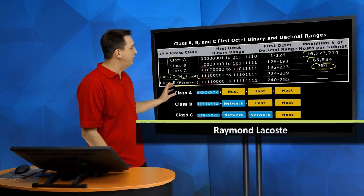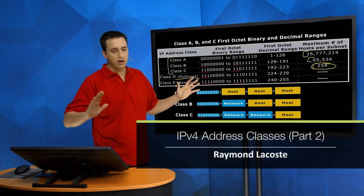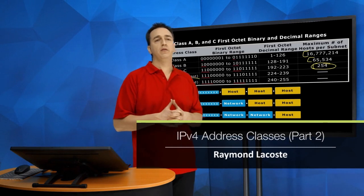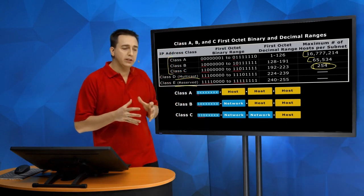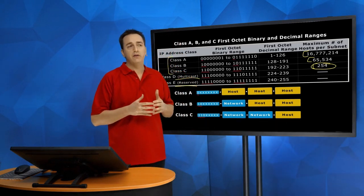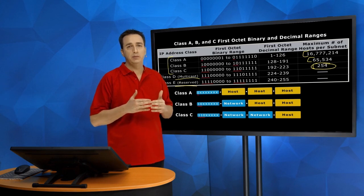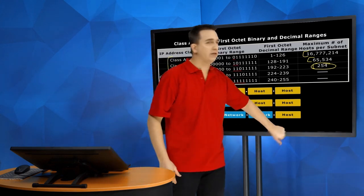So we're only dealing with Class A, B, and C when we are deploying our IPv4 addressing. And it's important to understand whether an IP address is a Class A address, a Class B address, or a Class C address.